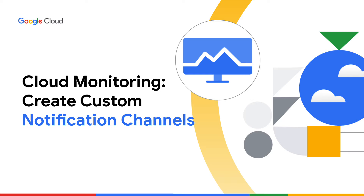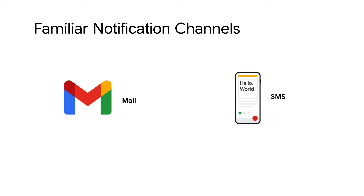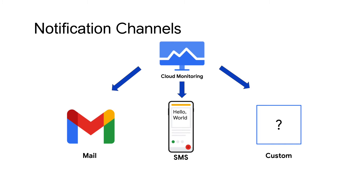Having a comprehensive monitoring and alerting service is a critical component to maintaining a reliable and secure cloud deployment. However, the standard notification channels available from these services — email and SMS — may not meet the needs of your organization or deployment. In this case, you can create a custom channel to integrate an alternative notification solution into your alerting pipeline.